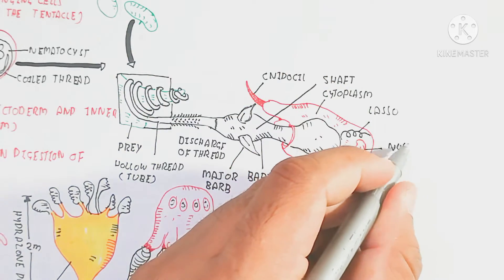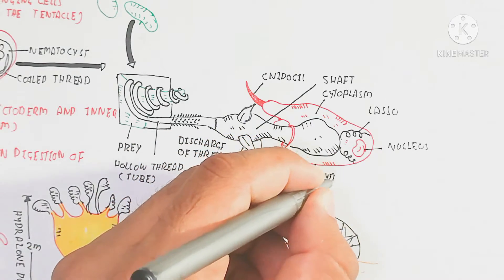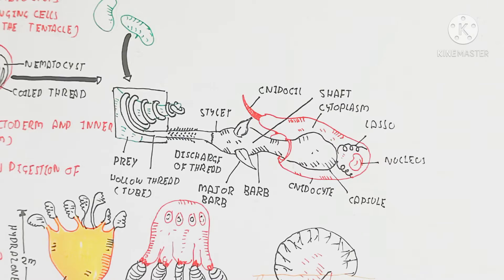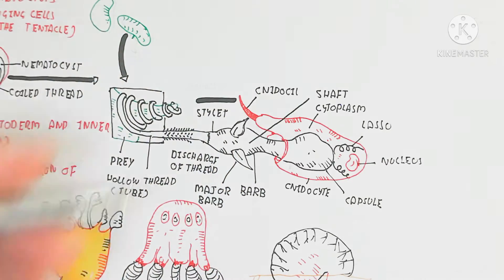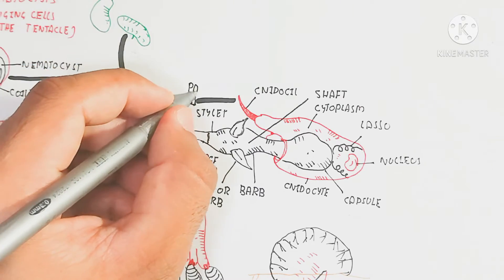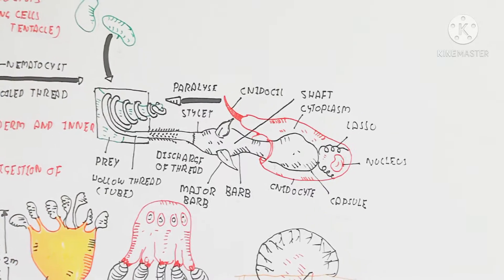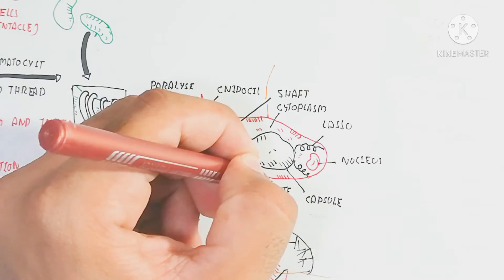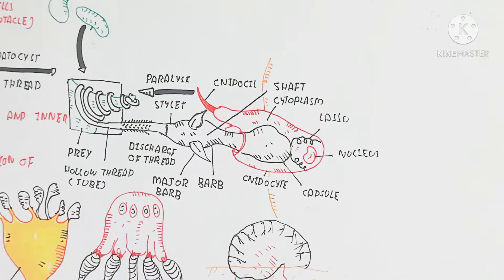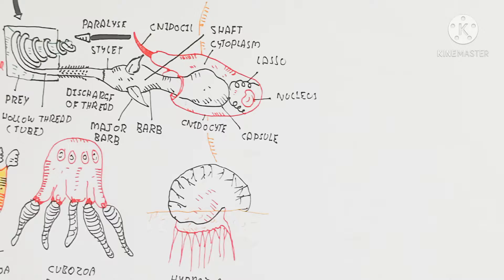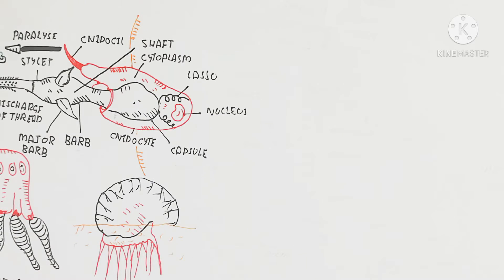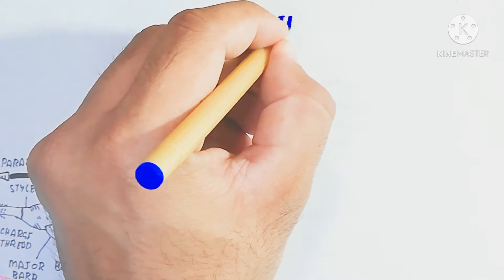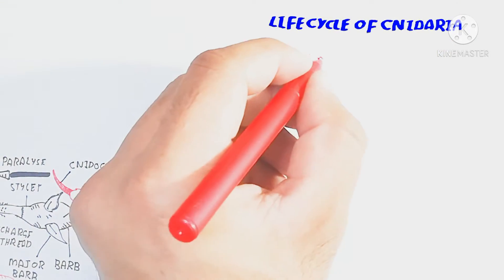The barb contains the thread and the major barb creates an opening. After capturing prey, it retracts back into the cell. The structure includes a nucleus, capsule, and stylet. The stylet is part of the stinging cell, also known as the needle cell. A shaft is present in the cytoplasm. This stinging property paralyzes the prey, and after paralysis, prey moves inside the hydra's gastrovascular cavity.